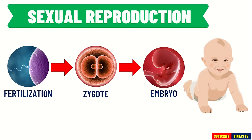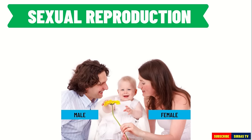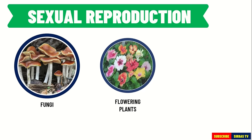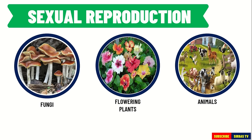Since there are two parents involved, a male and a female, this will produce an offspring that looks different from its parents. Its traits and genetic makeup are a combination of its parents, from the male and the female. This is the reason why we humans do not look exactly the same as our parents, because we reproduce sexually. Other organisms that reproduce sexually are fungi, flowering plants, and animals such as chickens, snakes, dogs, and pigs.